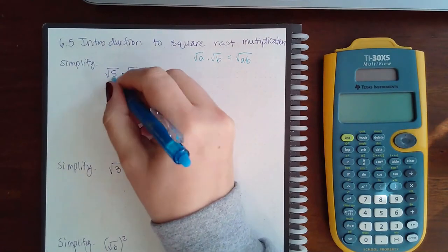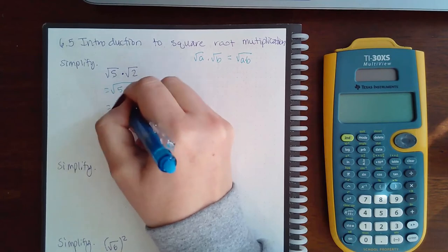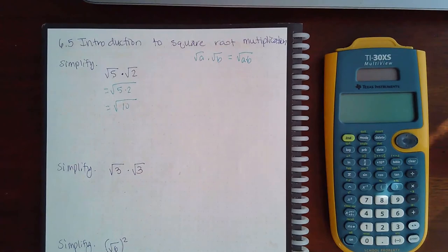For this instance, we would have the square root of 5 times 2, which is 10. You don't have any pairs of each one for anything to come out, so you just multiply the 5 and the 2 together.